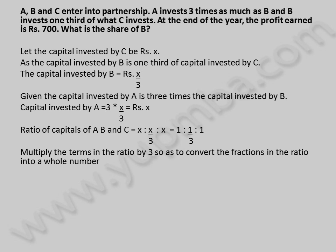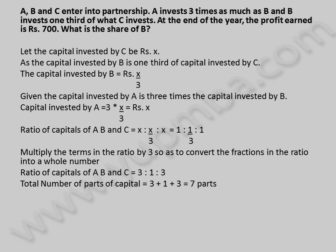Multiply the terms in the ratio by 3 so as to convert the fractions in the ratio into whole numbers. Ratio of capitals of A, B, and C is equal to 3 : 1 : 3. Total number of parts of capital is equal to 3 plus 1 plus 3, which equals 7 parts.